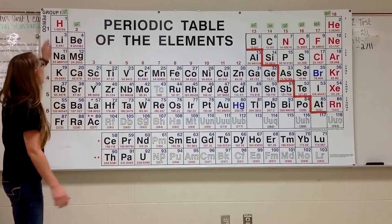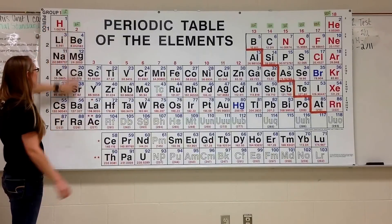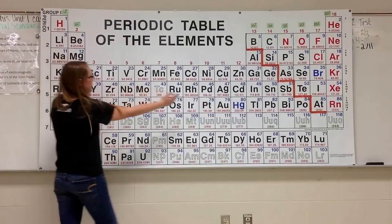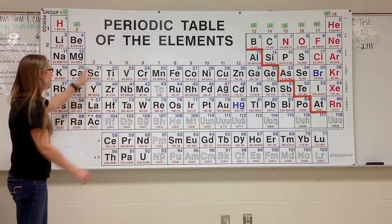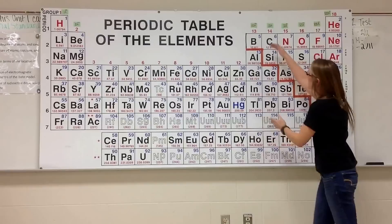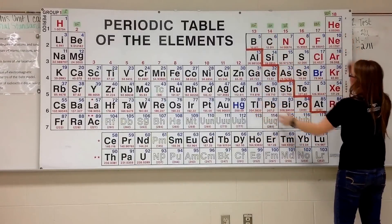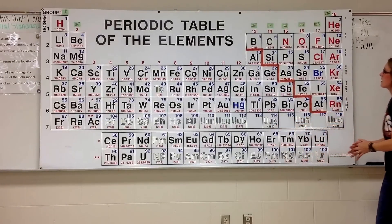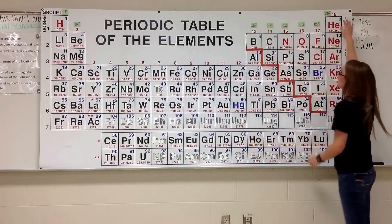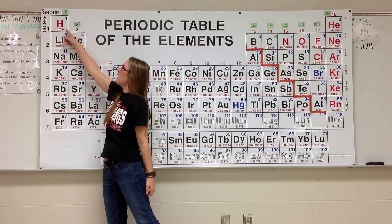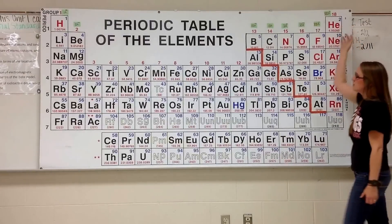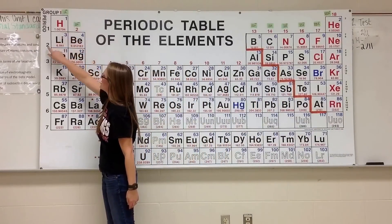Here is our periodic table. We have our S block, which is your first two groups — their outermost shell electrons are in the S orbital. In the middle we have our D block; all elements in this area have electrons in the D orbital. On this side is our P block, and then down here is our F block. Electron configurations are put into an order, starting with hydrogen here — we have 1s1. Helium fills our second electron, 1s2 for the S orbital. Lithium is in our second row, so second energy level, which is 2s1 because there is one electron here.